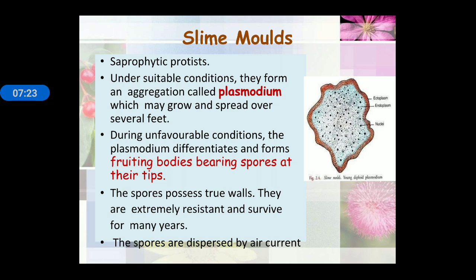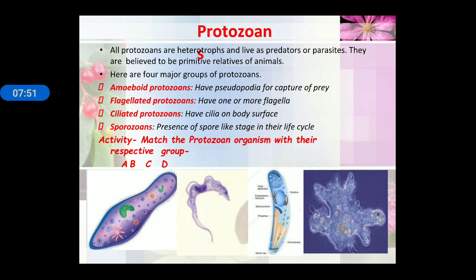Slime molds are saprophytic protists. Under suitable conditions, they form an aggregation called plasmodium, which may grow and spread over several feet. During unfavorable conditions, the plasmodium differentiates and forms fruiting bodies bearing spores at their tips; the spores possess two walls, are extremely resistant, and survive for many years, dispersed by air currents. All protozoa are heterotrophic and live as predators or parasites. There are four major groups: amoeboid (with pseudopodia), flagellated, ciliated, and sporozoans, which have a spore-like stage in their life cycle.